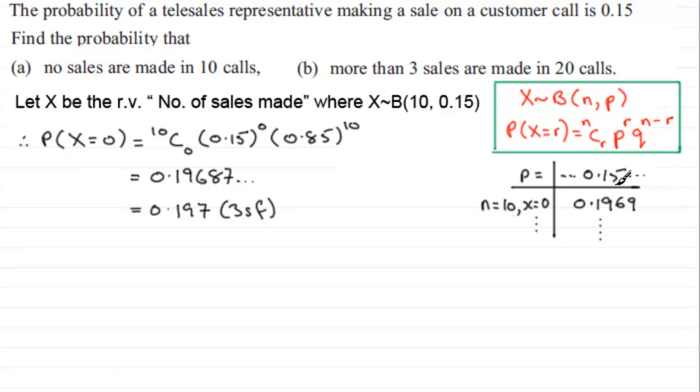This is the probability that X is less than or equal to 0. Well, that's going to be exactly the same as the probability X is equal to 0, so you could use that value there then.